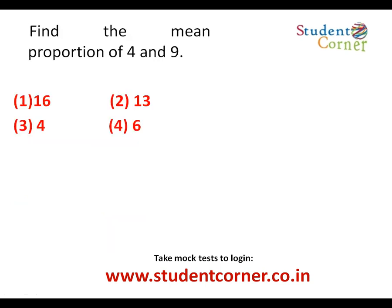Next, it is talking about mean proportion. If A, B, C are in continued proportion (mean proportion), then B² = A × C. Now A = 4 and C = 9, so B = √(A × C) = √(4 × 9) = √36 = 2 × 3 = 6. Therefore the mean proportion B is equal to 6.